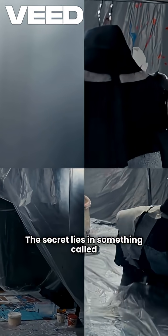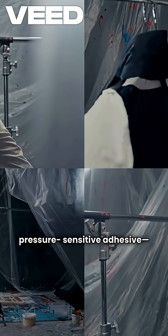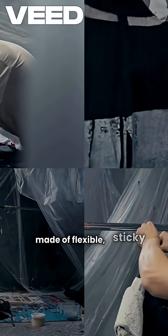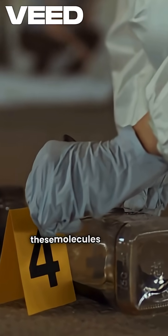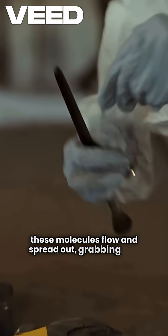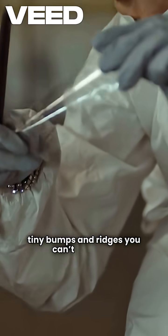The secret lies in something called pressure-sensitive adhesive, a special glue made of flexible, sticky molecules. When you press the tape onto a surface, these molecules flow and spread out, grabbing onto tiny bumps and ridges you can't even see.